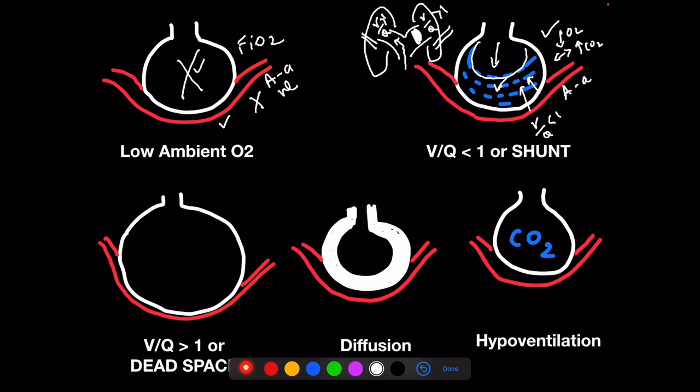You recognize a shunt because it is primarily a hypoxemia problem. Carbon dioxide rises later. It does not respond to FiO2 as much as it responds to PEEP.